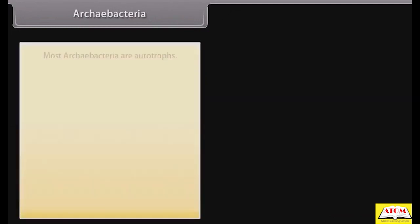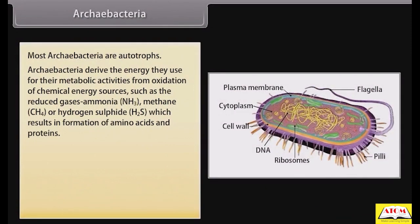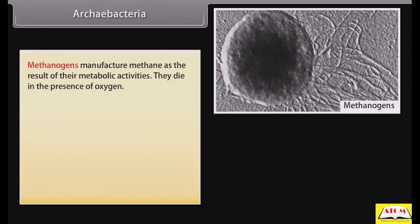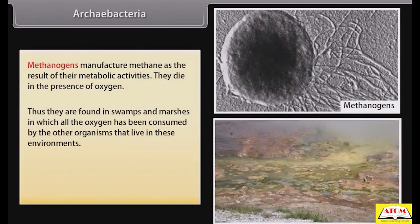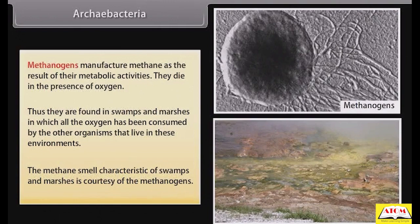Most Archaeabacteria are autotrophs. They derive energy for their metabolic activities from oxidation of chemical energy sources such as reduced gaseous ammonia (NH₃), methane (CH₄), or hydrogen sulfide (H₂S), which results in formation of amino acids and proteins. Archaeabacteria are divided into three groups: Methanogens, Thermoacidophiles, and Halophiles. Methanogens manufacture methane as the result of their metabolic activities. They die in the presence of oxygen and are found in swamps and marshes; the methane smell characteristic of swamps is courtesy of the methanogens.